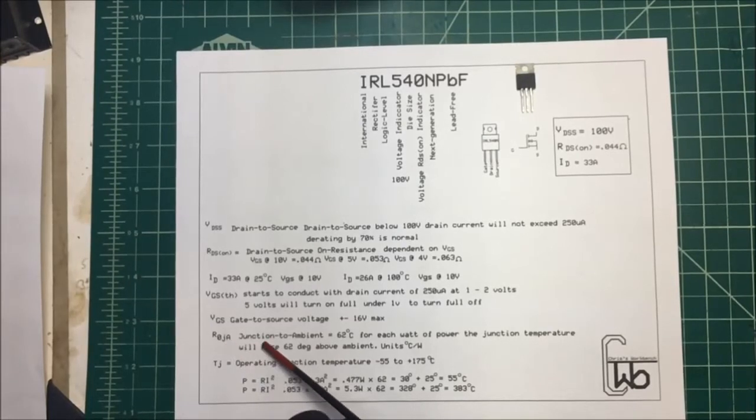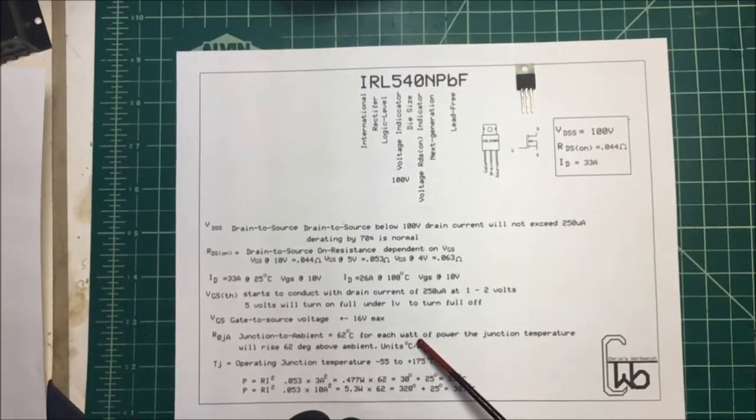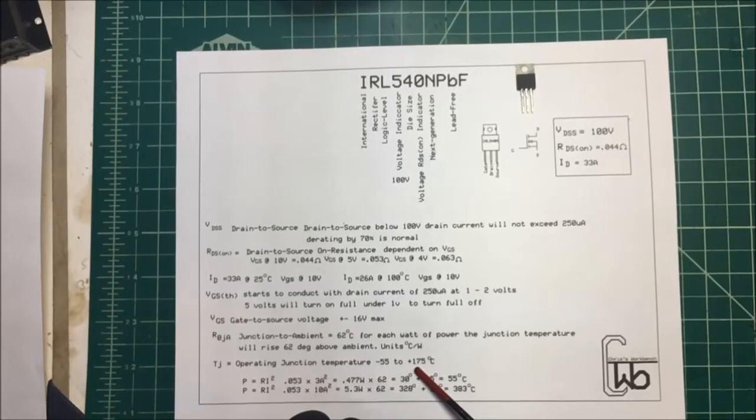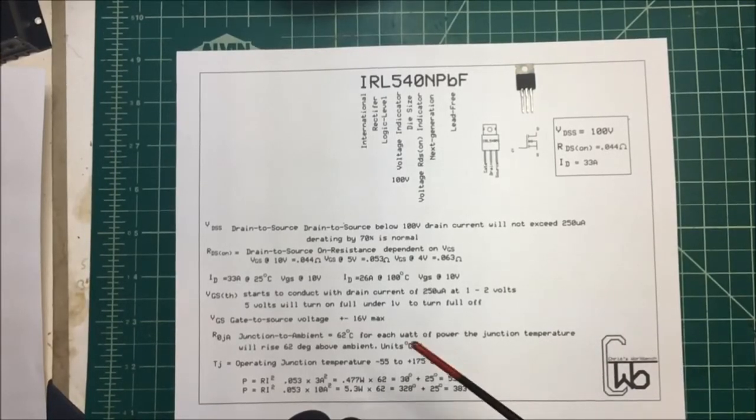We want to look at this junction to ambient temperature here. So for each watt of power, the junction temperature is going to rise 62 degrees above ambient. The 62 is in centigrade per watt. So if we take our half a watt times our 62, it's going to be 30 degrees. We add that to our ambient, so it's going to rise up to 55 degrees centigrade. Now the operating junction temperature can go up to 175 degrees centigrade, so we're well below that, within spec. That's going to work out fine. I'll probably add a little heat sink but probably don't even have to do that.